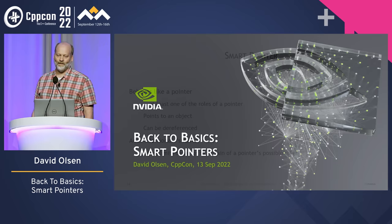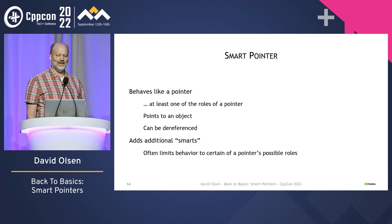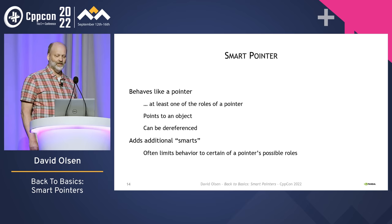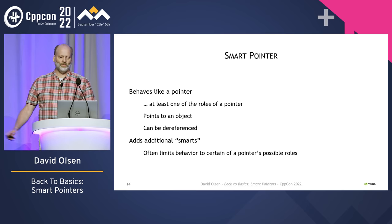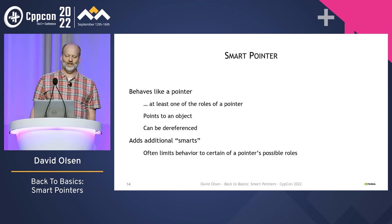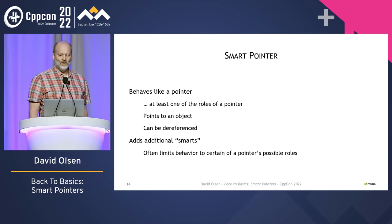Smart pointers are a tool that can be very helpful at taming the expansive behaviors of raw pointers. The first thing to know about smart pointers is that they behave like a pointer — not necessarily everything that a pointer can do, but they should have the API of at least one of the roles that a pointer can have. What is common to all the roles for a pointer is that the pointer can point to an object and can be dereferenced, so a smart pointer should at least be dereferenceable.